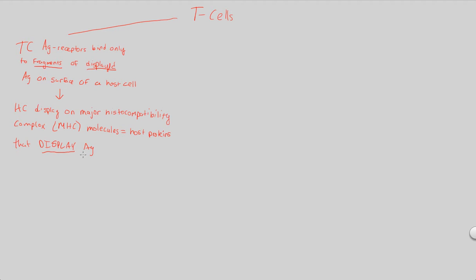This is a signal telling the T-cells, 'Hey, there's something weird here. Can you figure out what's going on? I'm not an immune cell. I can't deal with foreign pathogens.' And that's exactly what a T-cell is going to do. So how is a T-cell going to do its job of recognition and therefore acting upon the recognition of some sort of antigen being displayed?